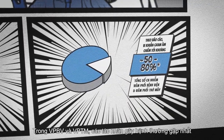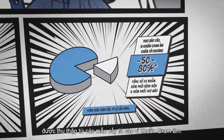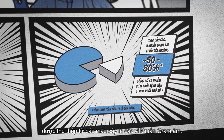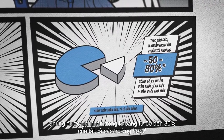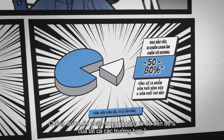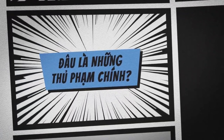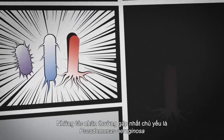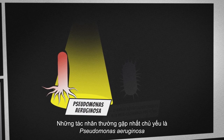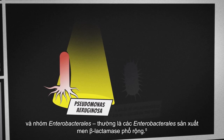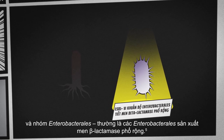In HAP and VAP, the most frequent pathogens recovered from cultures are gram-negative pathogens, reported in 50 up to 80% of all cases. The most frequent ones are Pseudomonas aeruginosa and enterobacterals, including ESBL-producing enterobacterals.